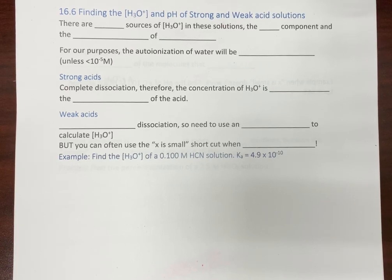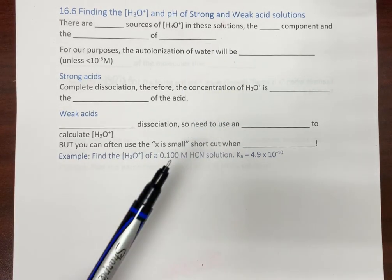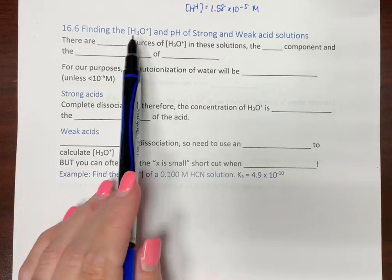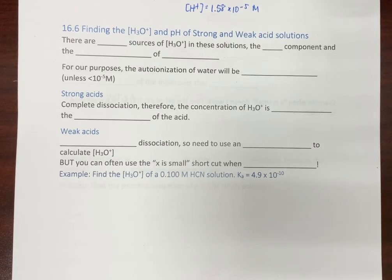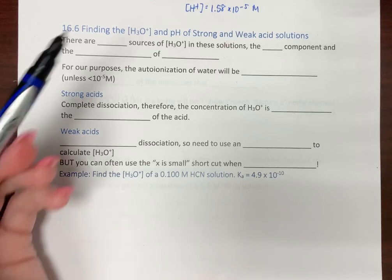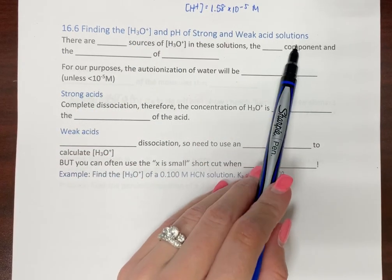The next thing we're going to talk about is what happens when we have a strong acid or a weak acid. How do we find our hydrogen ion concentration? So now, when you have this is a solution...